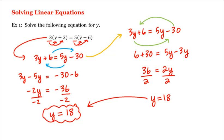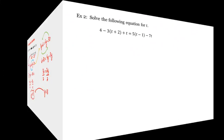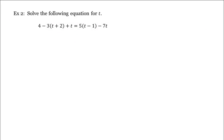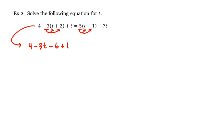Let's look at another example. Let's solve this equation for t. We'll start similarly and distribute this negative 3 to both of these two terms as well as the 5 to both of these two terms, which gives us 4 minus 3t minus 6 plus t is equal to 5t minus 5 minus 7t.